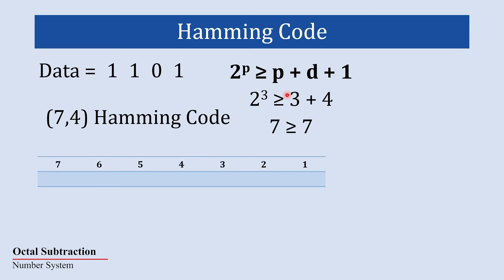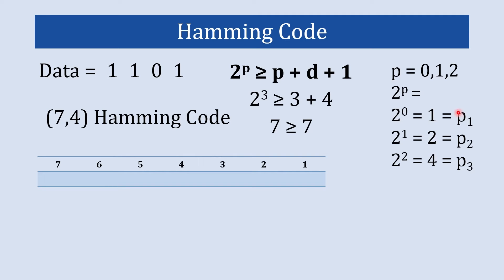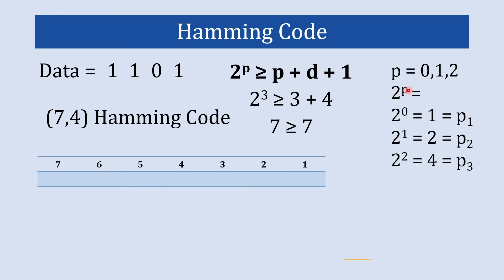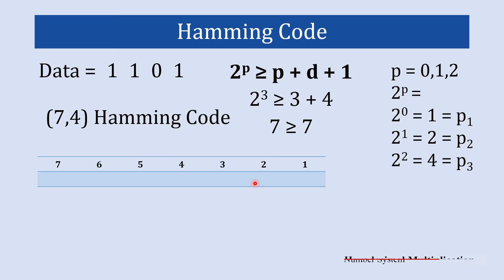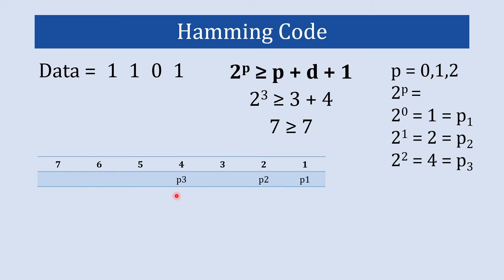To locate the parity bits, we evaluate 2^p for p = 0, 1, 2. So 2^0 = 1, meaning the 1st bit position is parity bit P1. Then 2^1 = 2, so the 2nd bit position is parity bit P2. And 2^2 = 4, so the 4th bit position is parity bit P3. These are the locations of parity bits P1, P2, and P3 within the code.